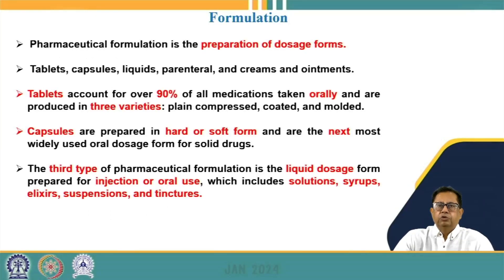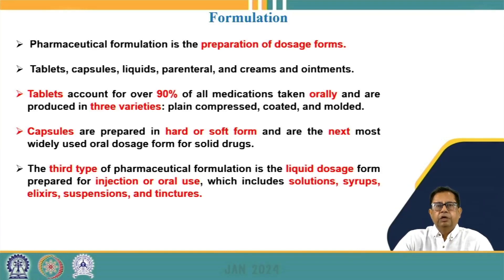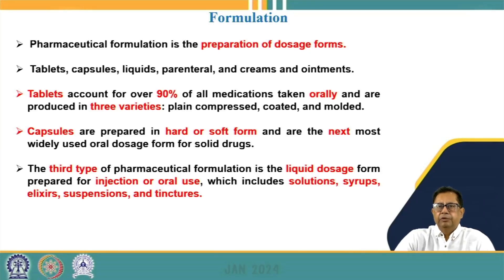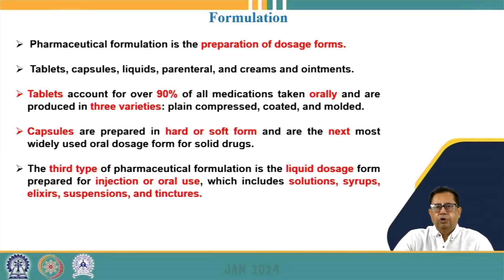After drug synthesis, we proceed to formulation — preparing drugs so they can be taken in a certain dose. Tablets are prepared from the drug formed, capsules are formed, liquids such as syrups are prepared, parenterals in the form of syringes or injections, and creams and ointments applied to the skin surface. Tablets account for nearly 90% of medication taken orally and can be plain compressed, coated, or molded. Capsules are the second largest pharmaceutical form and can be prepared in hard or soft form such as gels.